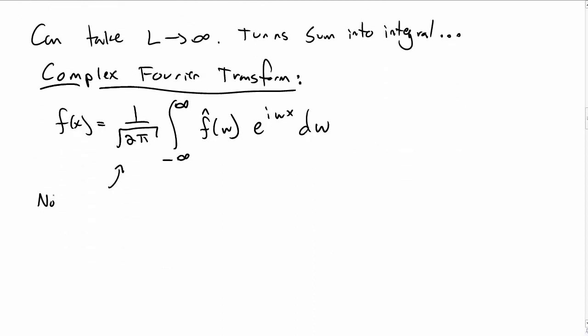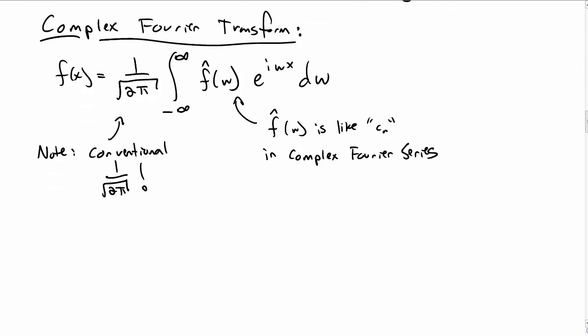Notice that there's a different convention for the complex Fourier transform, which is annoying. So this convention includes a 1 over the square root of 2 pi, so just be aware of that. And now there's the f hat of w, which is kind of like the c sub n's in the complex Fourier series. And we call f hat of w the complex Fourier transform of our function f of x.